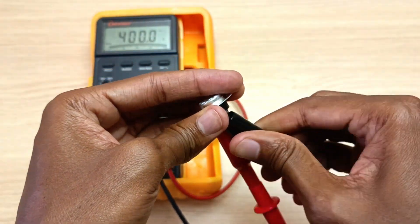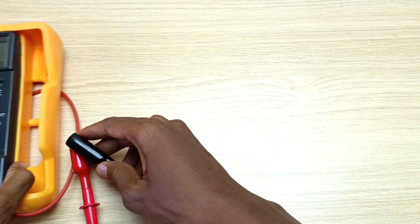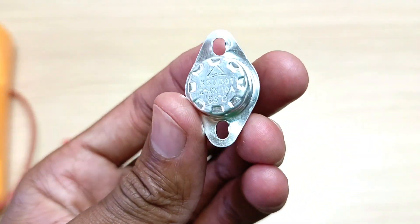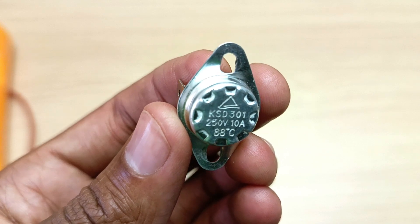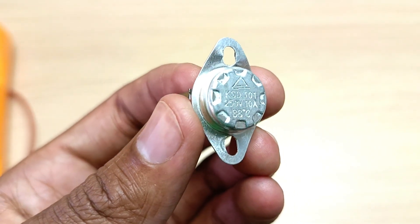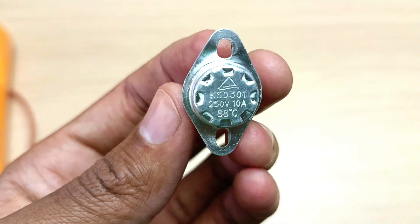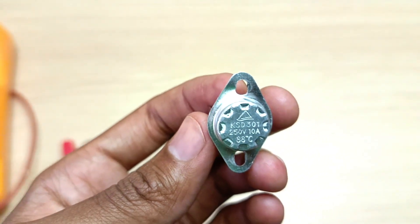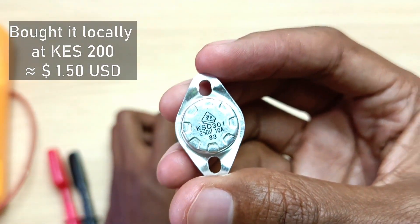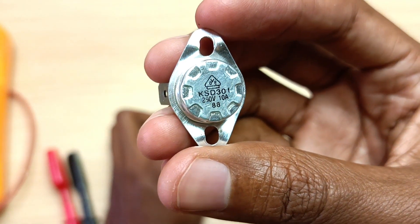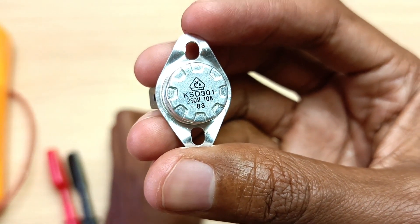Normally these things have three specifications. One is the voltage, in this case 250 volts, the maximum current that it can carry, in this case 10 amperes, and the temperature at which it activates, in this case 88 degrees Celsius. And this is the gadget that I got as a replacement. You can see the number is exactly the same and the ratings are exactly the same.